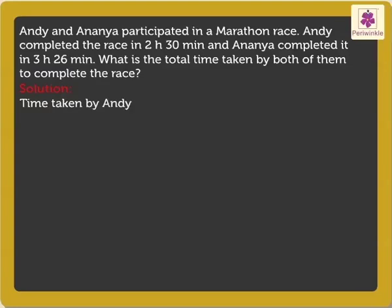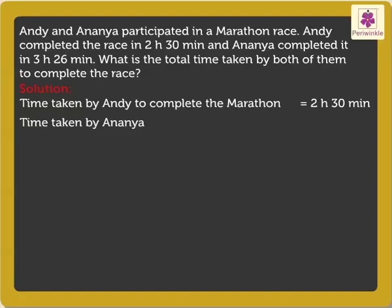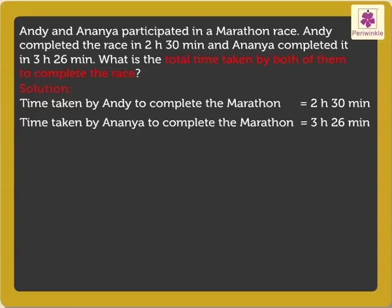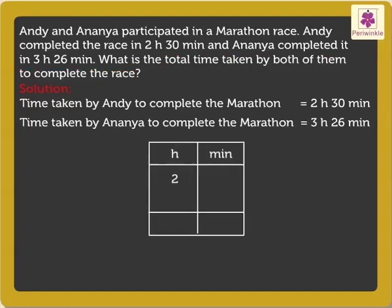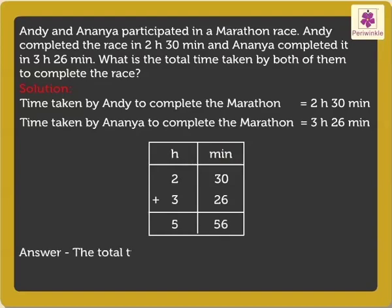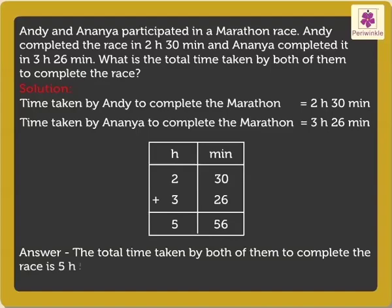Time taken by Andy to complete the marathon is 2 hours 30 minutes. Time taken by Ananya to complete the marathon is 3 hours 26 minutes. So, the total time taken by both of them to complete the marathon race is 2 hours 30 minutes plus 3 hours 26 minutes, which is equal to 5 hours 56 minutes. Thus, the total time taken by both of them to complete the race is 5 hours 56 minutes.